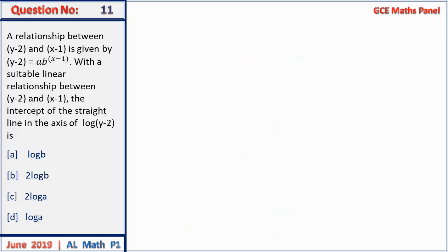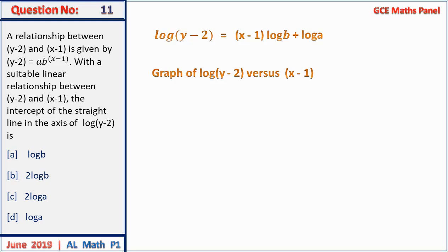Question 11: the relationship y − 2 = ab^(x−1). Taking logarithms of both sides: log(y − 2) = (x − 1)log b + log a. The graph of log(y − 2) versus (x − 1) gives a straight line with gradient log b and intercept log a. The intercept on the log(y − 2) axis is log a. Answer D.